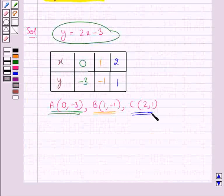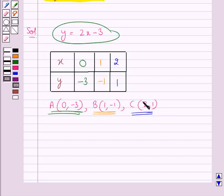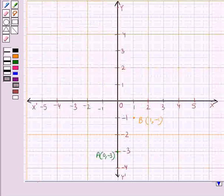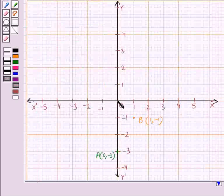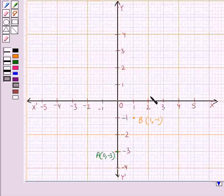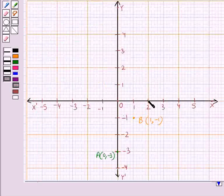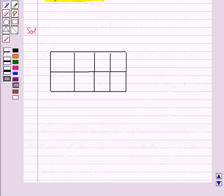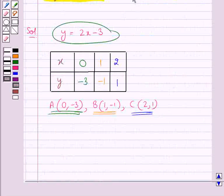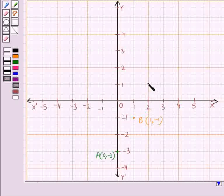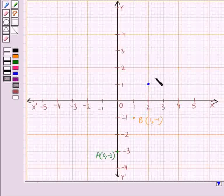Then we have point C with coordinates 2, 1. X coordinate is 2, y coordinate is 1. Now since the x coordinate is 2, so from origin O we will move 2 units to the right. That is we come at this point. And since the y coordinate is 1, so we will move 1 unit up. So we reach at this point. This is the point C with coordinates 2, 1.